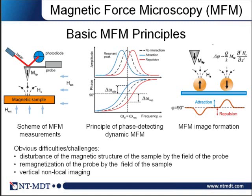If we have interaction between a cantilever and a sample — for example, a magnetic particle in the sample creating dipole fields that exert a force on the cantilever — the resonance frequency changes. Depending on the sign of the forces, whether attractive or repulsive, the resonance frequency can be lower or higher. Correspondingly, the phase dependence on the driving frequency changes, as shown by the blue and red curves in the cartoon. If the driving frequency is constant, the interaction causes changes in the phase between the cantilever oscillation and the driving force.